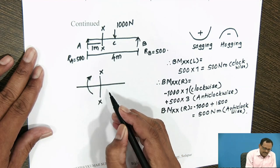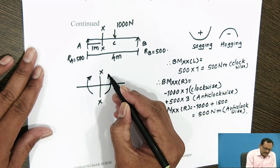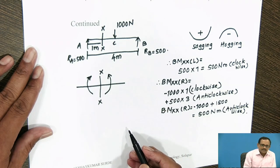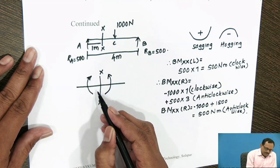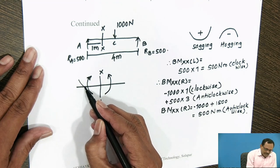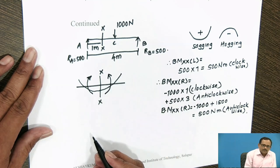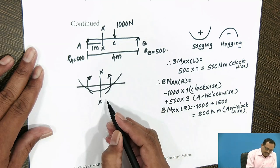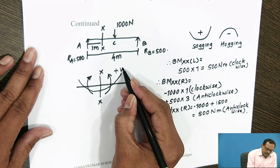Such a moment tends to bend the beam to a curvature having concavity at the top. Such moments are considered to be positive.